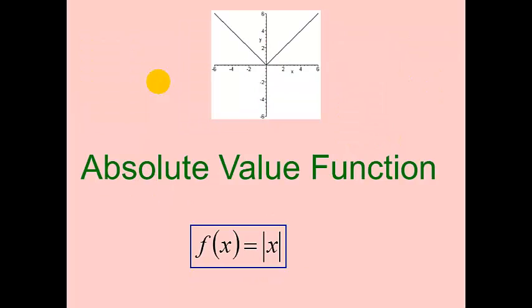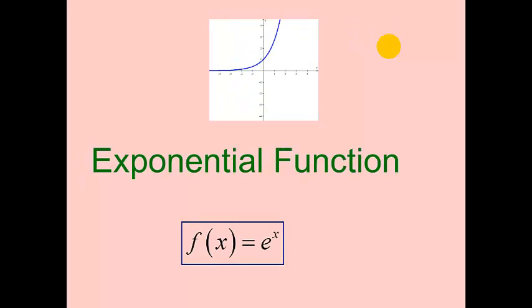The absolute value function is v-shaped. It would always be positive if we just had the absolute value of x, because it essentially was the identity function before the absolute values, but anything that ended up negative ends up being positive here, giving us this v-shape. The domain is all real numbers — you could put in anything and never get something undefined — but the range is from zero to infinity. This function is never negative.